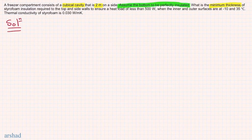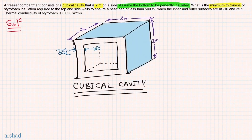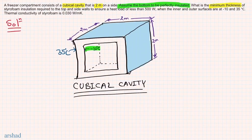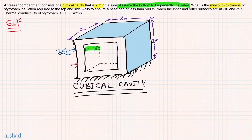Now let's draw a sketch. We have a cubical cavity with the inner surface temperature at minus 10 and the outer surface temperature at 35 degrees Celsius. The sides of this cube are 2 meters, so we can easily find the surface areas. The important information is that the bottom is perfectly insulated, meaning there is no heat transfer from that bottom side. We mark that side as thermally insulated. The question asks for the thickness L of the insulation.